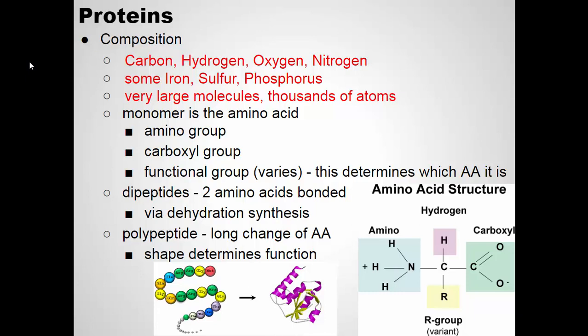Linking two of these amino acids together forms what's called a dipeptide — di meaning two. That happens again during dehydration synthesis. If you link together hundreds or thousands of these amino acids, you end up with a protein — a polypeptide. Depending on which amino acids are used and what order they're in, that determines how it folds up and what its shape will be. The shape of a protein is of key importance.